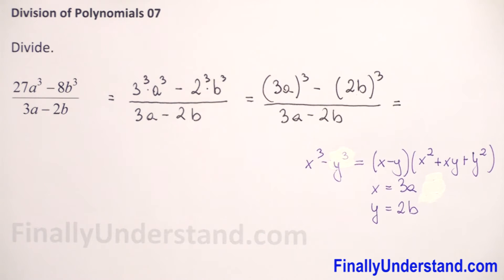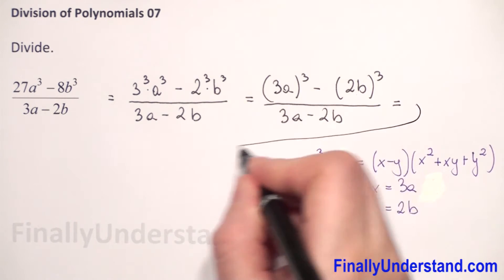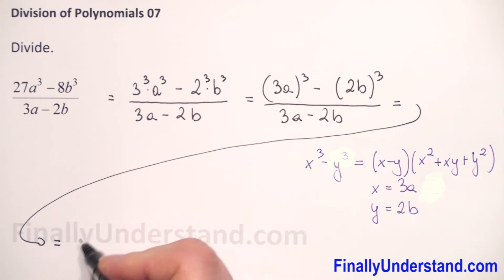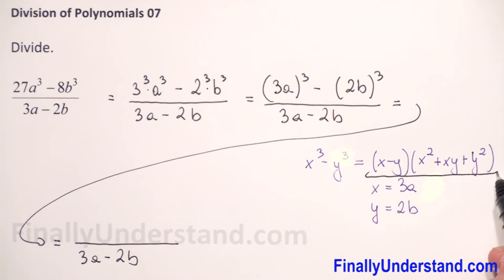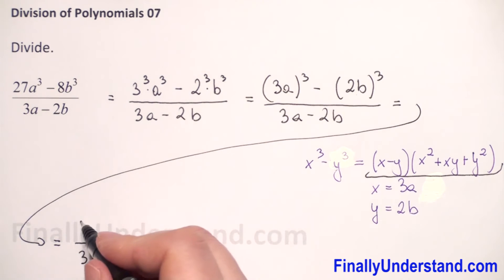So we can rewrite our numerator that this is equal, the numerator we copy to that form. So now we can rewrite our numerator, in first parenthesis we have x minus y, so 3a minus 2b.